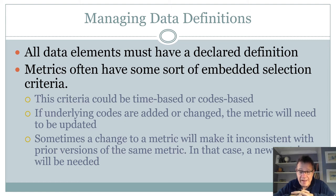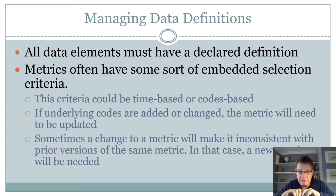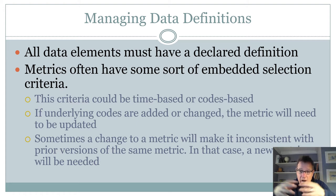For example, say you are tracking patients who have received breast cancer screenings. You are looking for female patients in a certain age range and for various procedures based upon a code set. These codes are updated year to year, often becoming more specific. As you go from year to year, you may need to add additional codes to that definition to properly capture breast cancer screening.